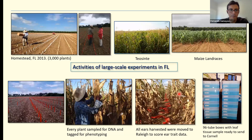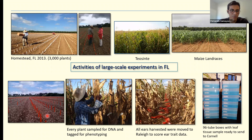Here are some pictures of the experiment in Homestead, Florida. This is one of the Florida experiments, John Holland walking through the rows, me planting corn, and one of the teosinte and land race experiments. Every plant was sampled for DNA and targeted for phenotyping, and all the ears that were harvested were moved to the lab to score the ear trait data.